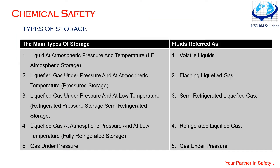We have defined five main types of storage with reference to the fluid. First: liquid at atmospheric pressure — atmospheric storage; these fluids are referred to as volatile liquids. Second: liquefied gases under pressure at atmospheric temperature — pressurized storage; these fluids are called flashing liquid gases. Third: liquefied gases under pressure and low temperature — refrigerated pressure storage; such fluids are called semi-refrigerated liquefied gas. Fourth: liquefied gas at low atmospheric pressure and low temperature — fully refrigerated storage; fluids referred to as refrigerated liquefied gases.